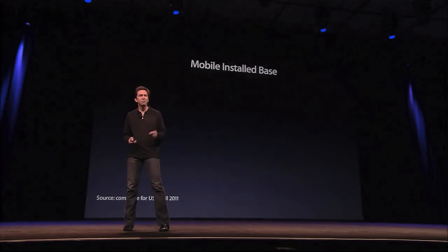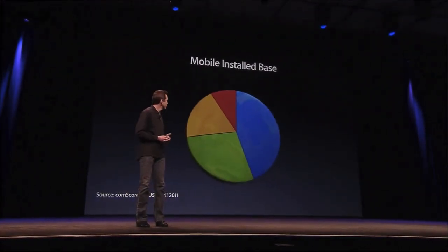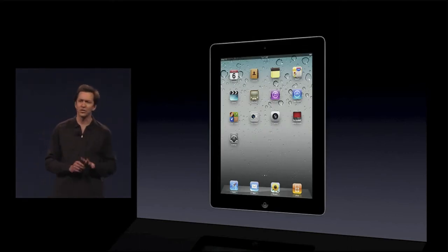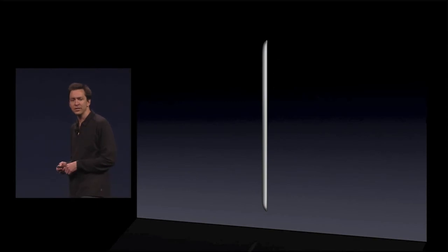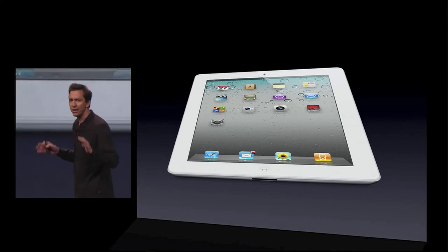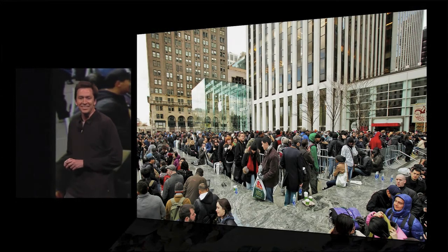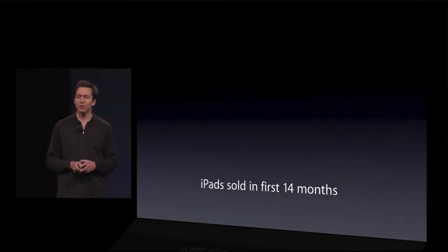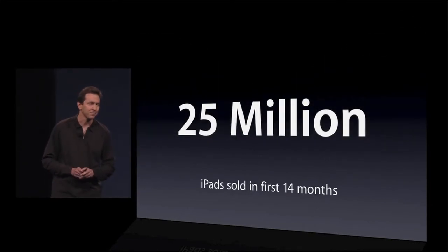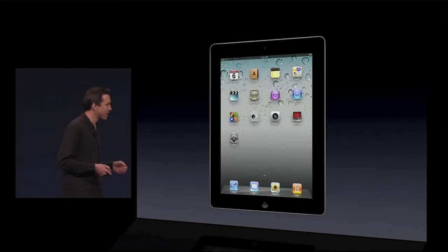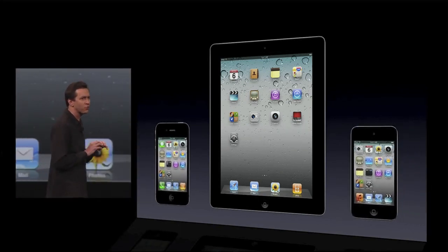That makes iOS the number one mobile operating system with 44% of the market. Now, the latest addition to the iOS family is the iPad 2, which is an incredible product — even thinner and lighter than the original. It comes in black and white, has cameras in the front and back. It is an amazing product, and our customers just couldn't wait to get their hands on it. In the first 14 months, we have already sold more than 25 million iPads.